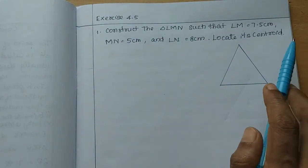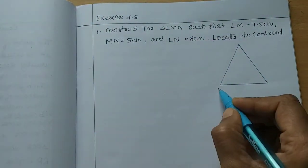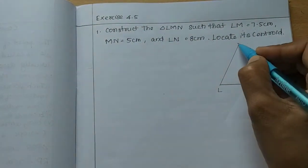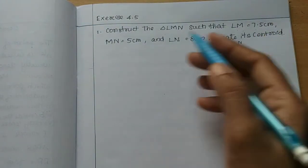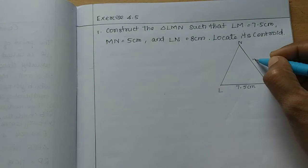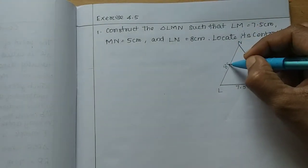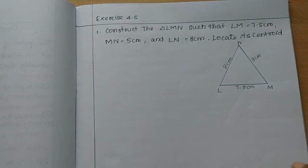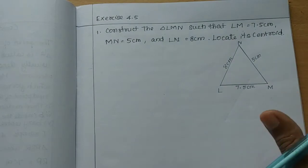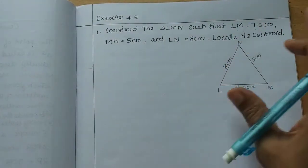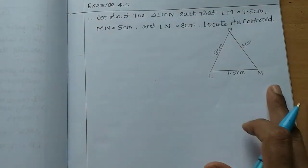Centroid, I will tell you about centroid. So first name is LMN. Let's mark it. LM length is 7.5 cm and MN length is 5 cm and LN length is 8 cm. So now you have one mark.